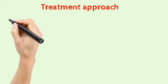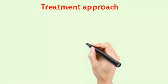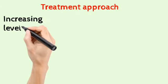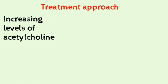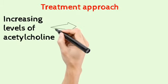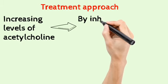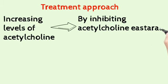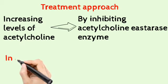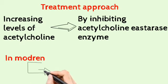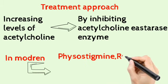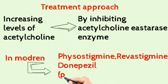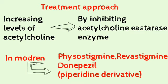Treatment of both schizophrenia and dementia includes improving the levels of acetylcholine. In order to improve acetylcholine levels, we need to block an enzyme called acetylcholinesterase. Acetylcholinesterase is an inhibiting enzyme for acetylcholine, so once we inhibit it, acetylcholine levels will be improved. The drugs include physostigmine, rivastigmine, and donepezil.